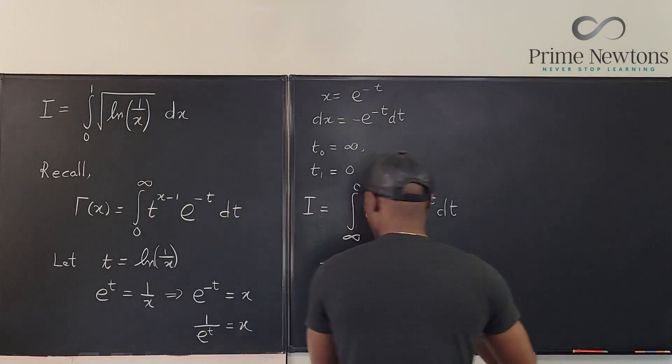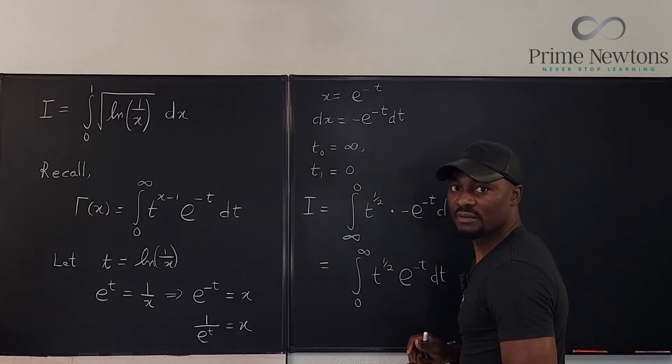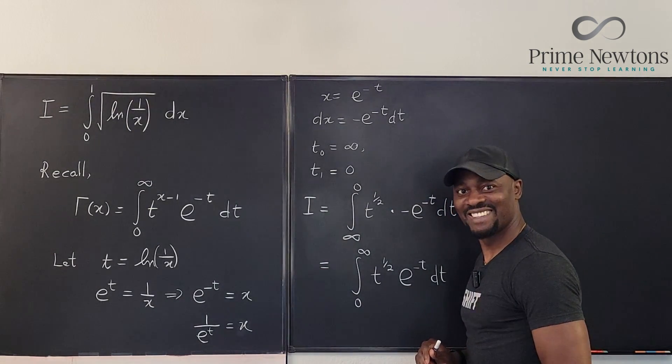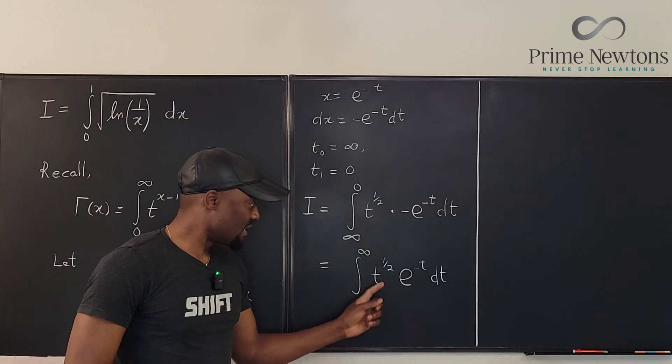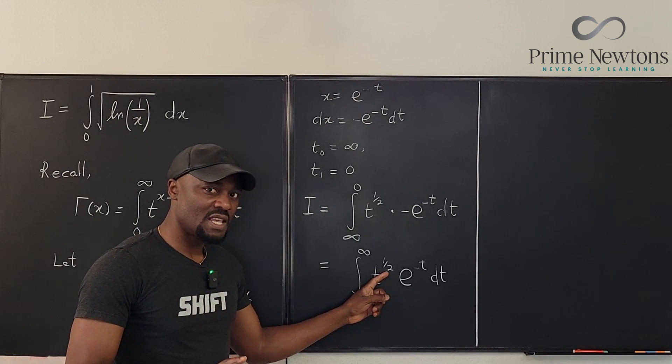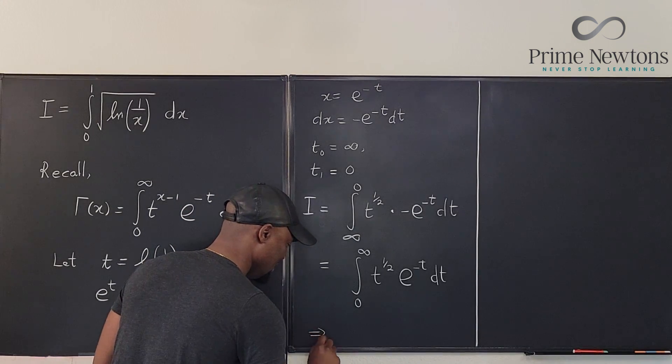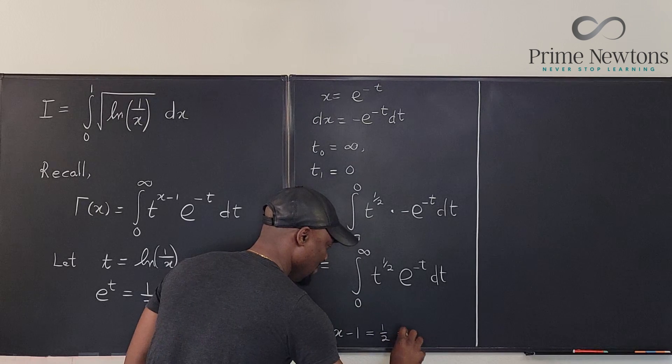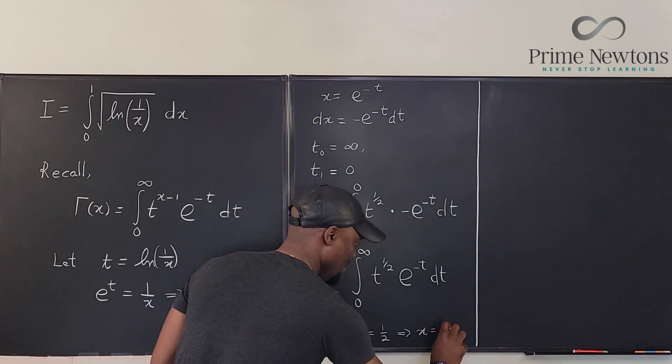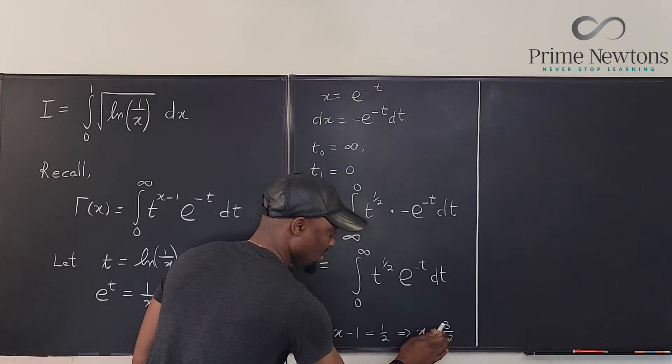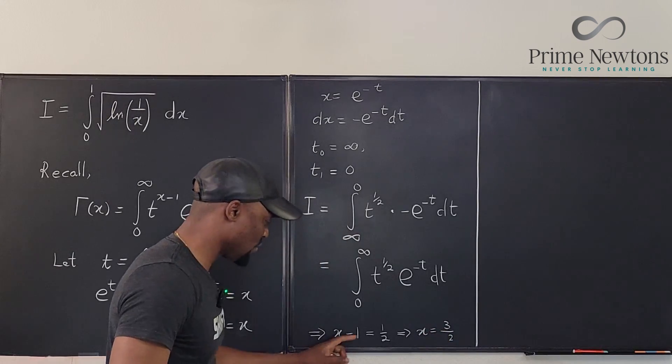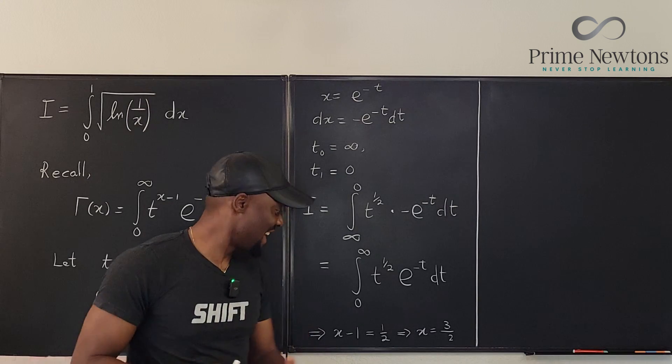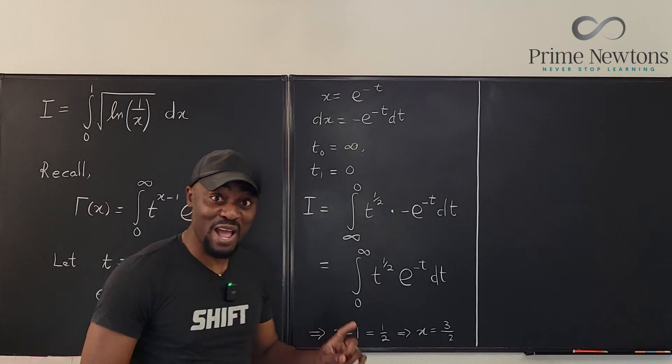Now compare what I just generated with the definition of the gamma function. What do you see? So from here we can say that our x minus 1 equals 1 half. So this implies x minus 1 is equal to 1 half, which implies x equals 3 halves. Or we can say that x is 1 half plus 1. Nice. Let's write it as 1 half plus 1.